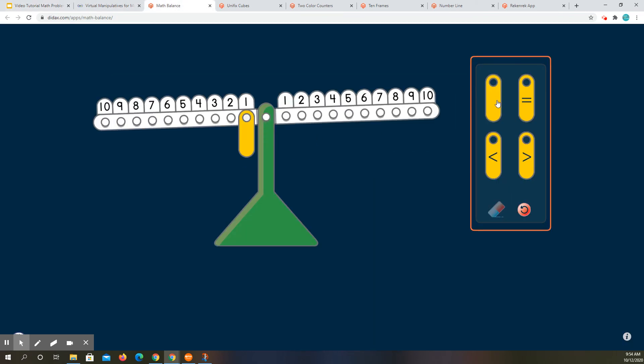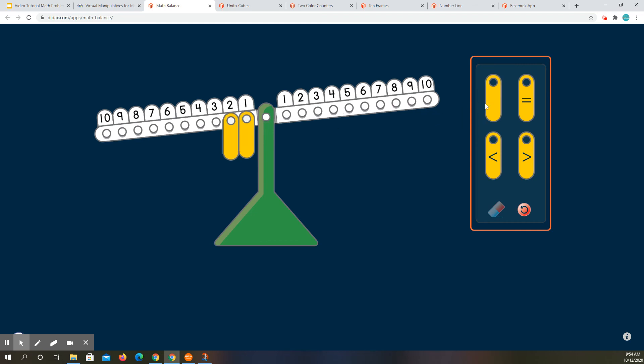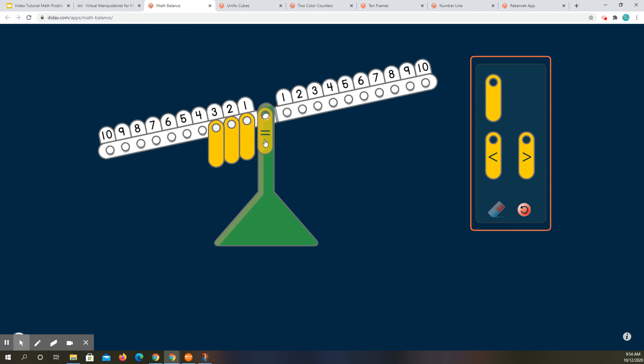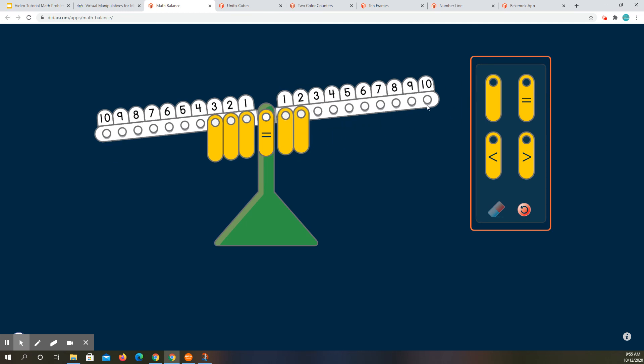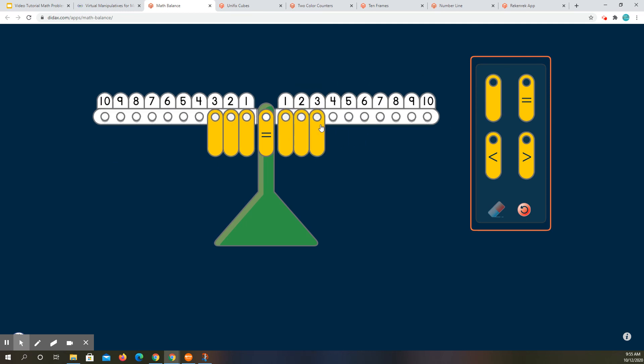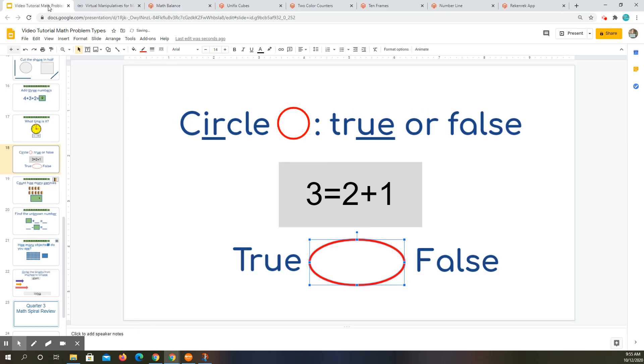Let me put 3: 1, 2, 3 is equal to 1, 2 plus 1. Look at this. See how it's in a straight line? When it's in a straight line, that means that it's balanced, and so that would be true.